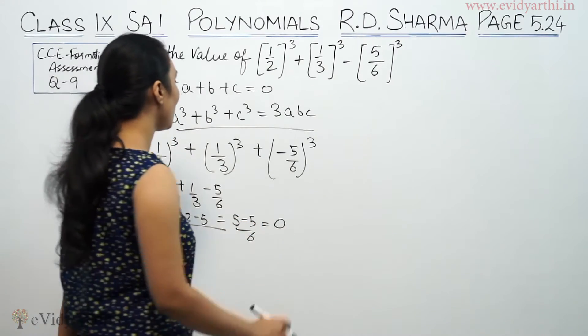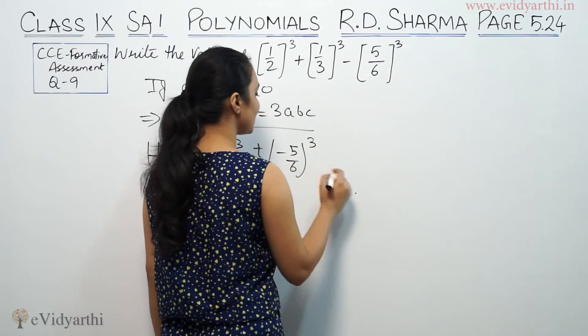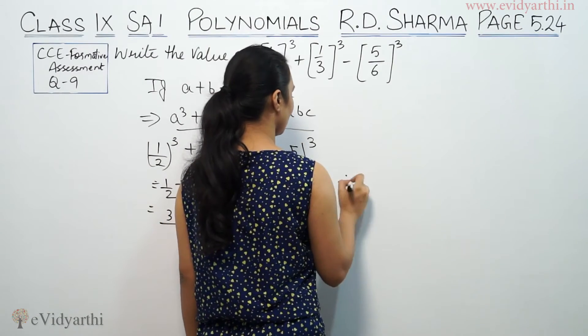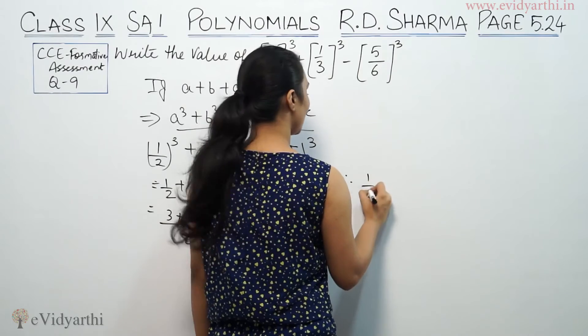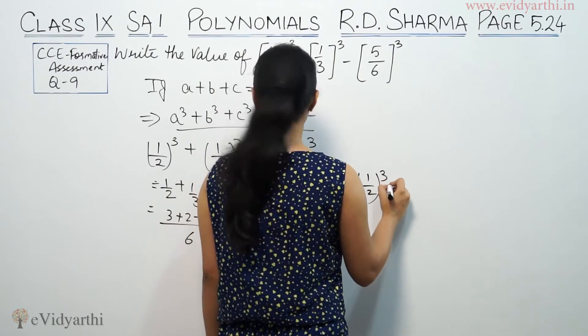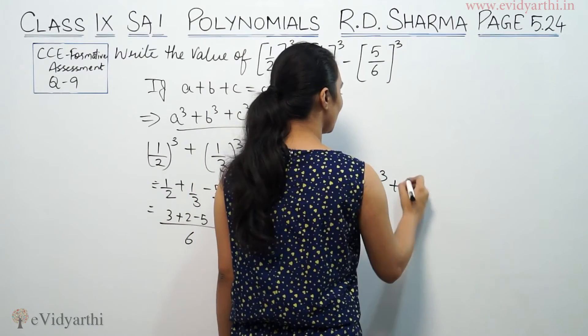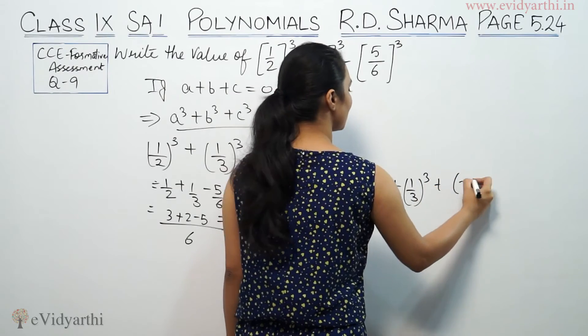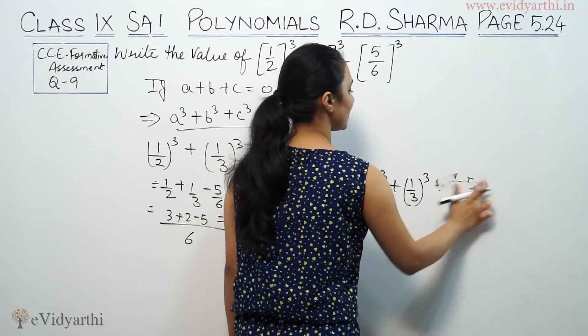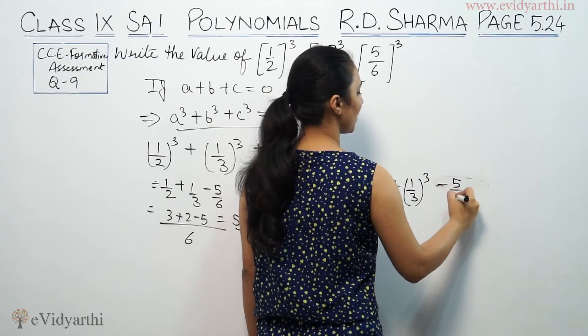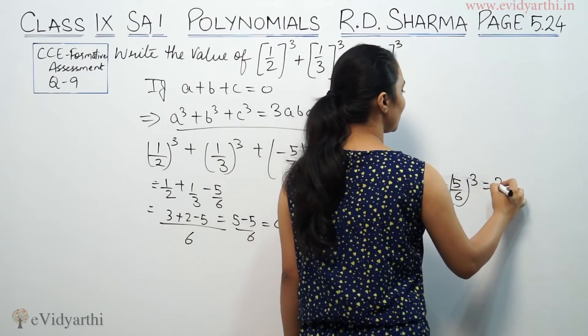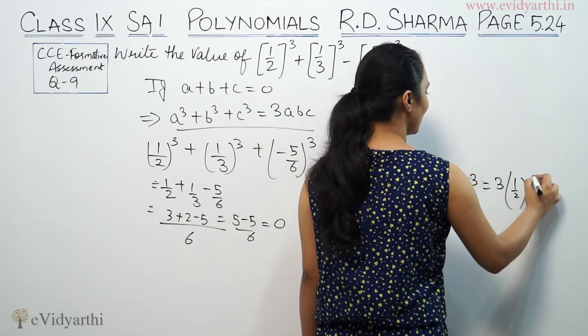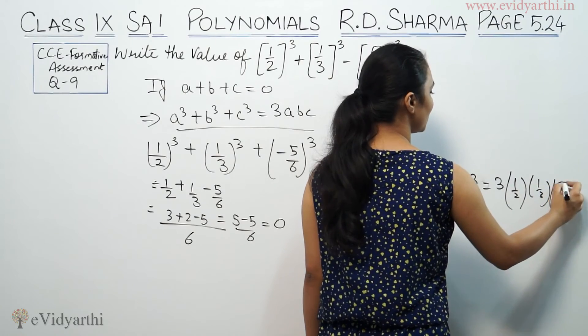So this equals 0. Therefore, (1/2)³ + (1/3)³ + (-5/6)³ will be equal to 3 times 1/2 times 1/3 times -5/6.